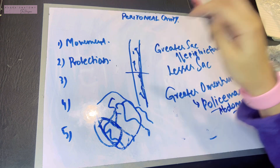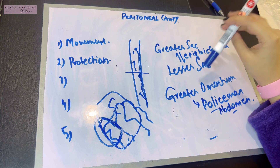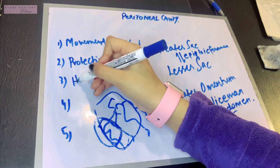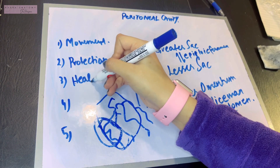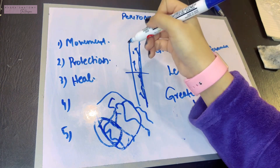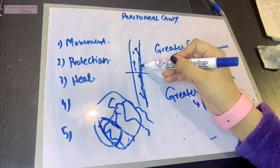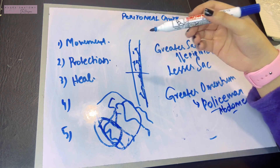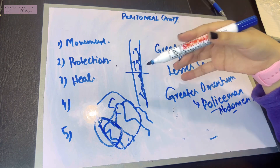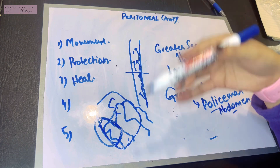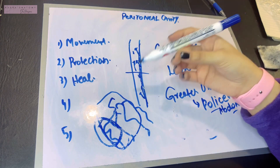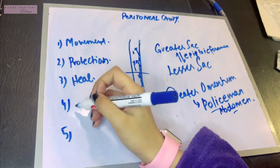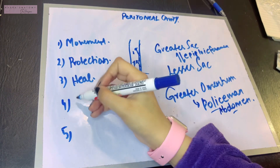The third function is healing. The mesothelial cells that are secreting fluid also have the power to transform into fibroblasts, and fibroblasts are the chief healing cells of the body.